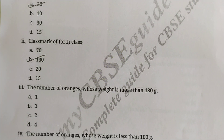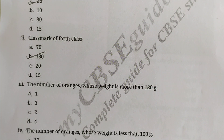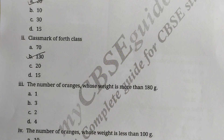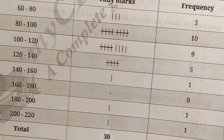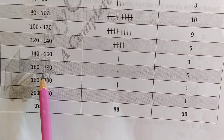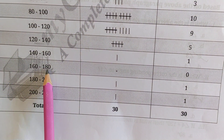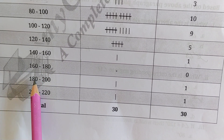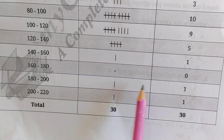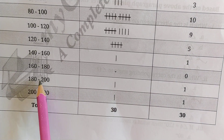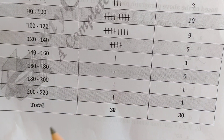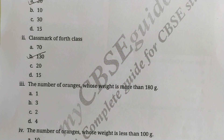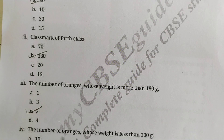The next question is: how many oranges have weight more than 180 grams? Looking at the table, intervals below 180 are not counted. From 180 onwards, the 180–200 interval has 1 orange and the 200–220 interval also has 1 orange. So 2 oranges have weight more than 180 grams. 2 is the correct answer.